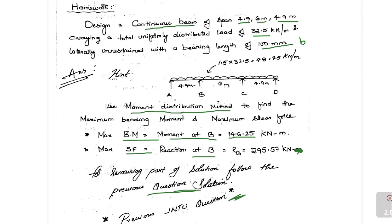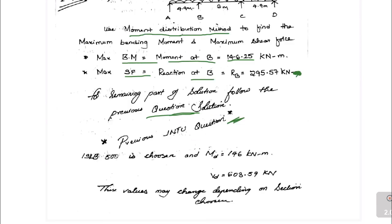And upon calculation I was made to choose ISLB, Indian Standard Lightweight Beam 500, and the design strength of that section is 146 kilonewton meter in bending and in shear it is having a strength of 603.59 kilonewtons.